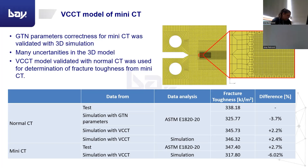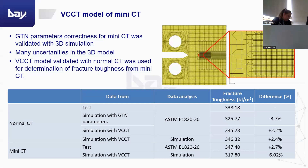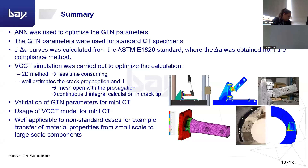To summarize our work: an artificial neural network was used for the determination of the GTN parameters. Thereafter, they were validated on normal and mini-CT specimens. Finally, a new VCCT method was developed for the calculation of the J-integral. In the future, we think this method can be applicable to non-standard cases — for example, transferring material properties from small-scale to large-scale components. Also, our future plan is to further develop this VCCT model so that not only fracture toughness could be determined, but also the brittle-to-ductile transition zone could be investigated.